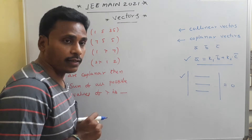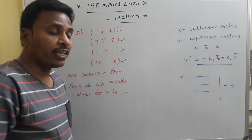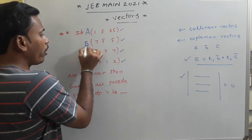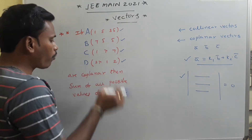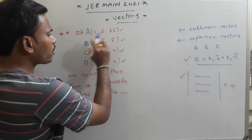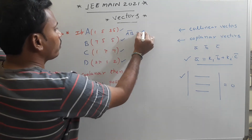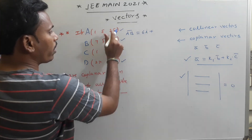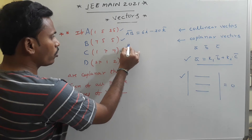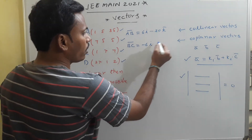The problem involves four coplanar points, so we convert them into three vectors. Calling the points A, B, C, D, vector AB = OB − OA gives 6i + 0j − 30k. Vector BC = OC − OB gives −6i + (λ − 5)j + 2k. Vector CD = OD − OC gives (2λ − 1)i + (1 − λ)j − 5k.